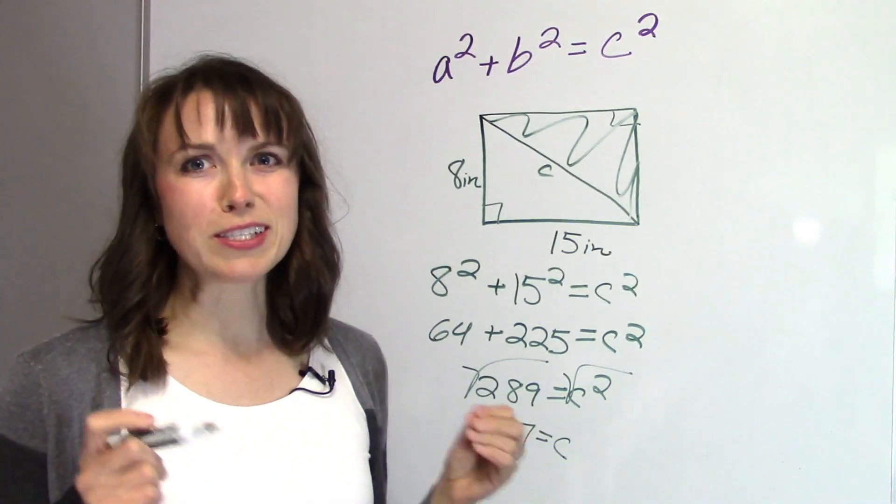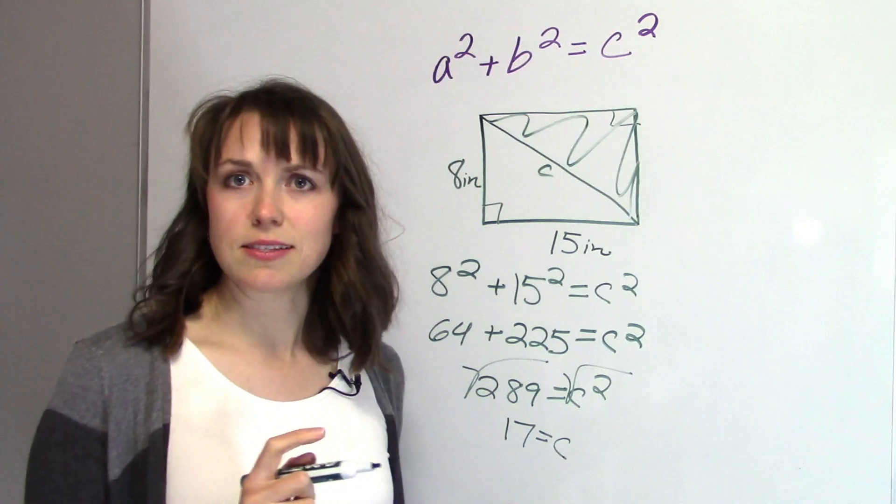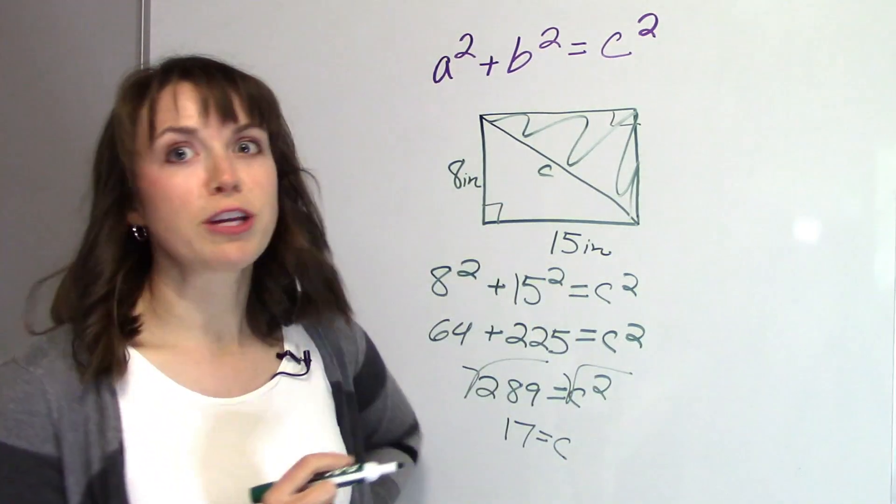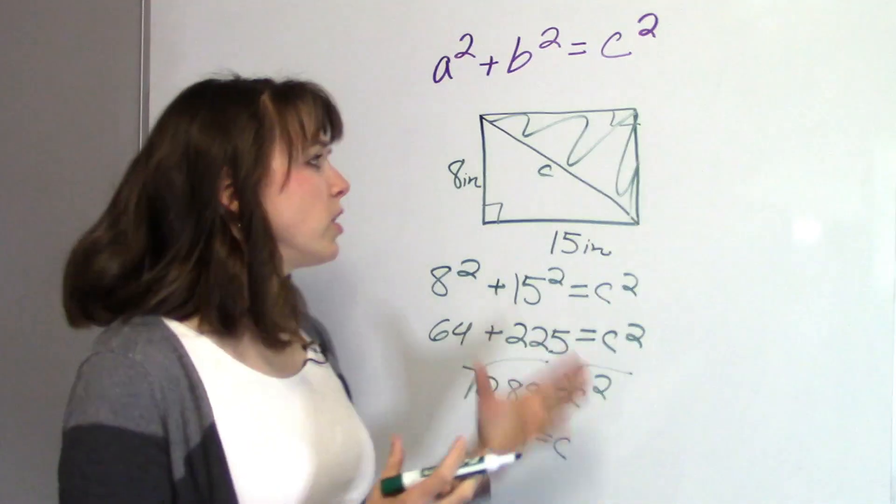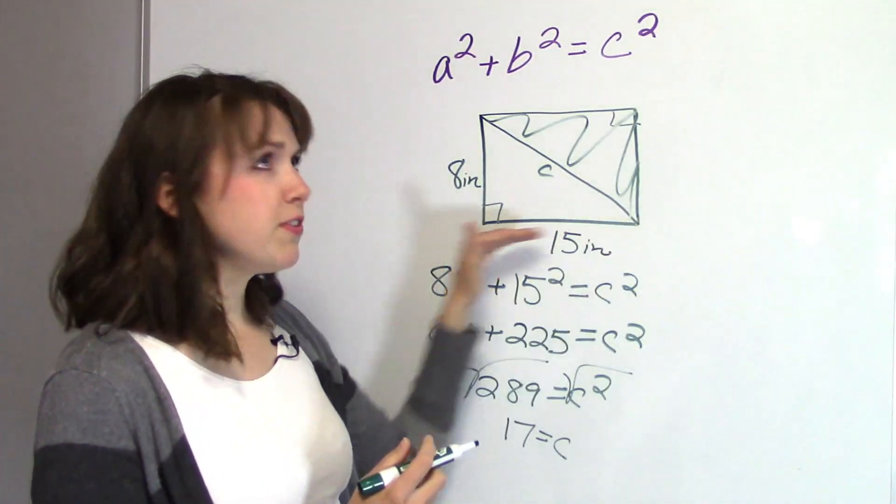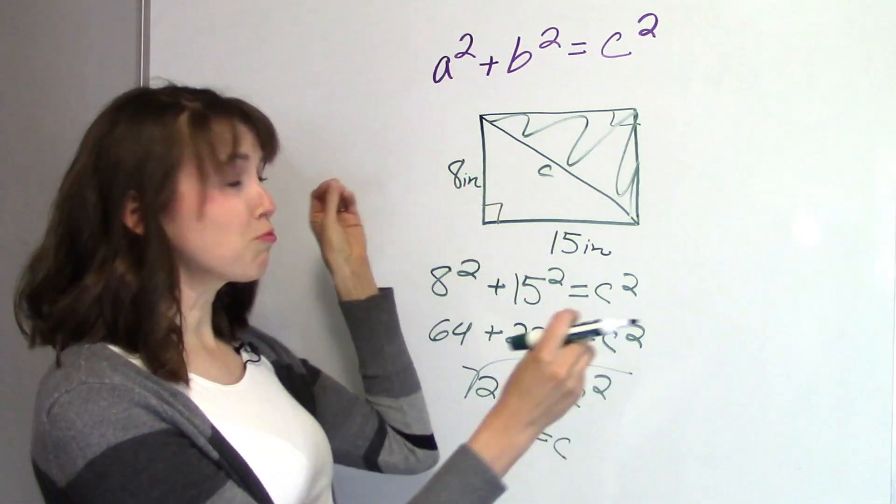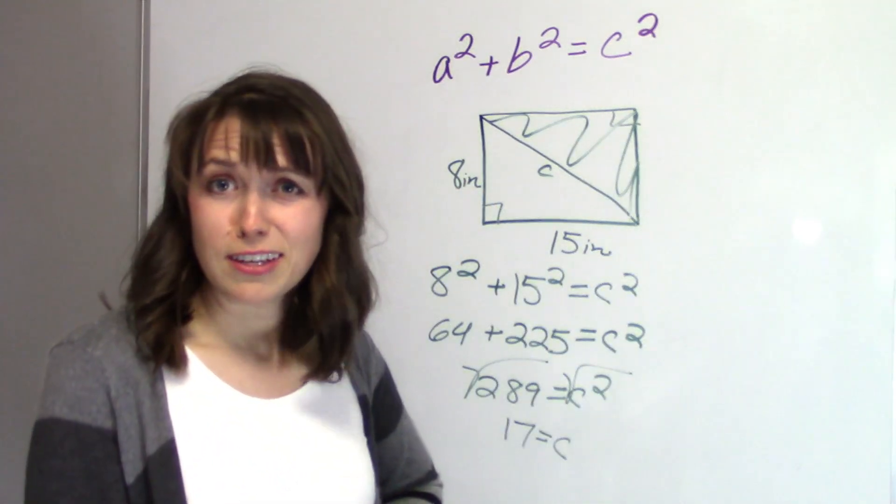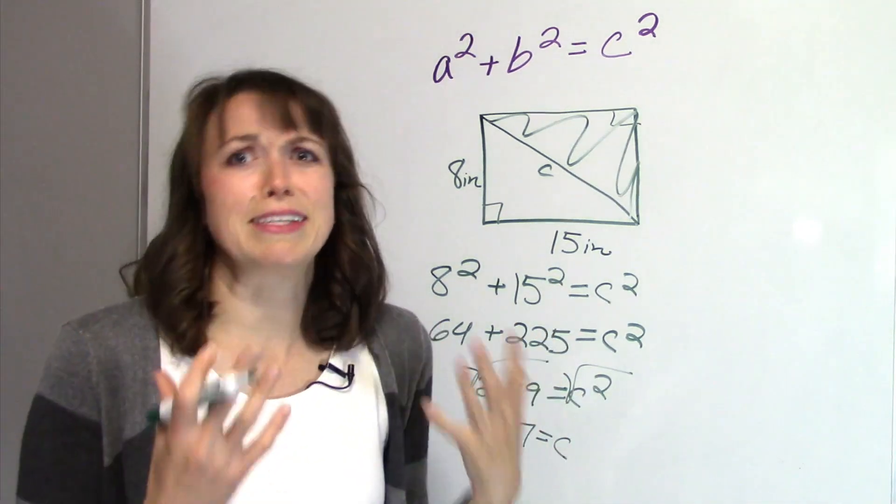Now, what I want to make sure that you do is make sure that the answer makes sense. Like, what if I would have gotten 35? Would 35 make sense? Would a computer screen that's only 15 inches across and 8 inches high, could the hypotenuse really be 35? No. So really make sure that your answers just make sense.